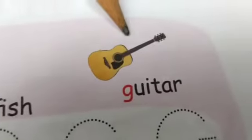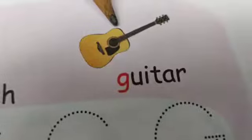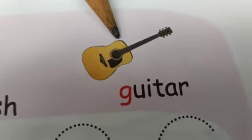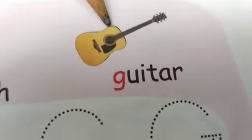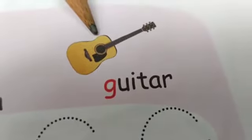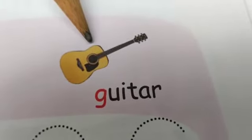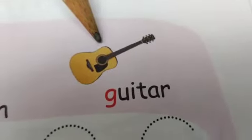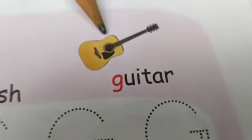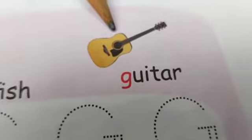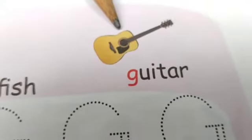What is this? This is a guitar. It is a musical instrument. G — guitar.